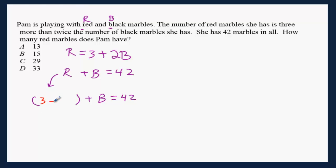Now take off the parentheses. That's 3 plus 2B plus B equals 42. Combine like terms: 3 plus 3B equals 42.